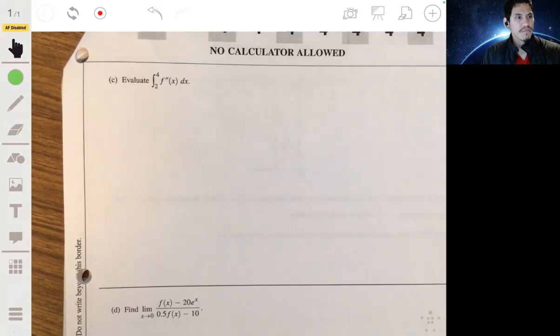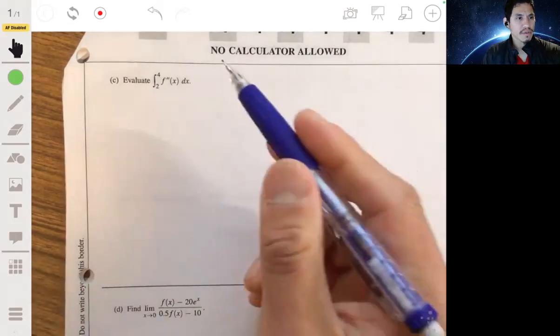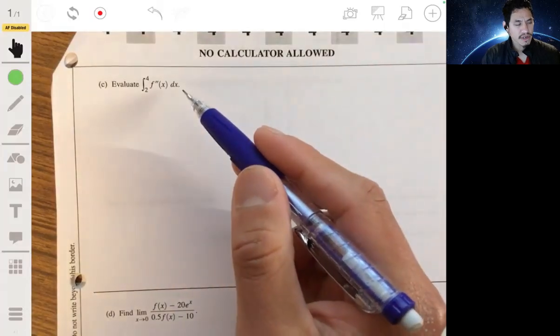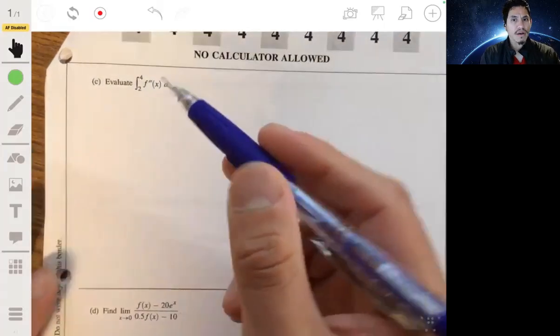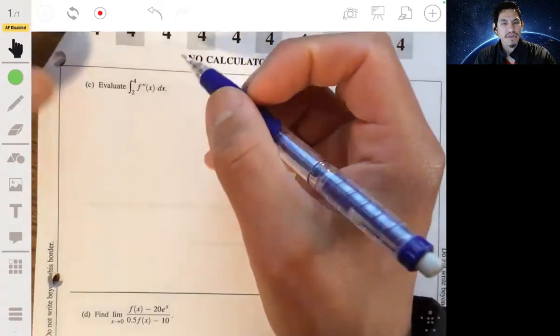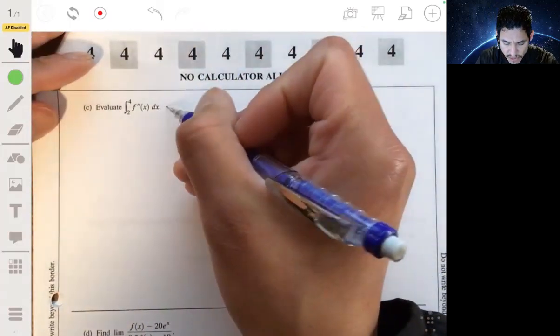Okay, evaluate the integral from 2 to 4 of f double prime of x. Okay, so you really just have to understand how the second derivative relates to the first derivative.